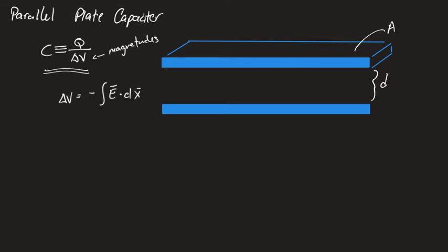We're going to use the definition of capacitance to get there. In the end, what I'm hoping we have is something related to the size and shape of the object, not the charge and potential. We already have the definition of capacitance based on charge and potential difference. I'd like to know whether making the plates bigger or changing their separation distance changes the capacitance — the relationship between plate size and separation distance.